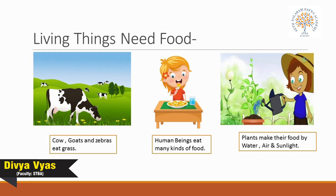Animals feed on other animals or on things they get from plants. For example, cows, goats, and zebras eat grass. Tigers and lions eat deer or other animals. Human beings eat many kinds of food.